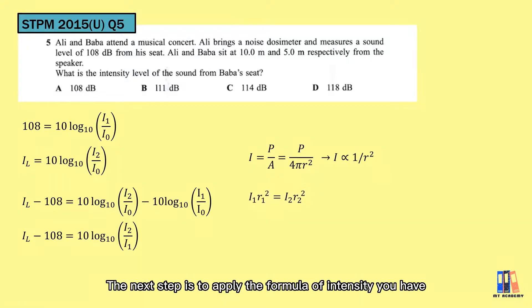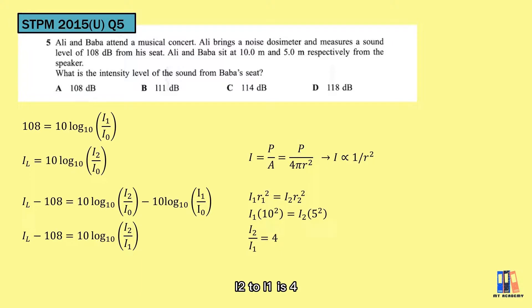So now the next step is to apply the formula of intensity you have learned in the last chapter. We already learned that intensity is inversely proportional to the square of distance. For a point source, we have the ratio equation of I₁r₁² = I₂r₂². Put in the values, and you can obtain the ratio of I₂ to I₁ is equal to 4. So put it back to the equations, and you can calculate the intensity level at Baba is equal to 114 dB.